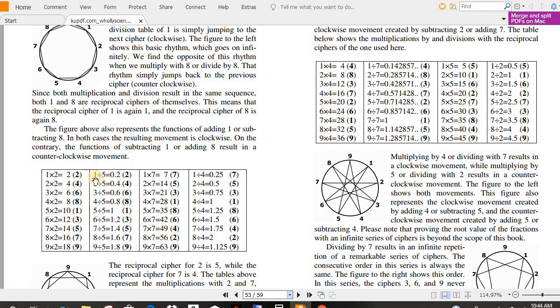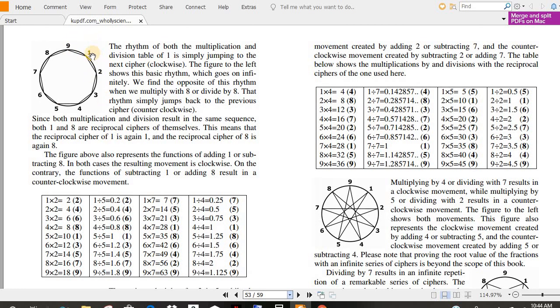This means that the reciprocal cipher of one is again one and the reciprocal cipher of eight is again eight. The figure above also represents the functions of adding one or subtracting eight. In both cases, the resulting movement is clockwise. On the contrary, the functions of subtracting one or adding eight result in a counterclockwise movement. What it's basically saying is it's going to go two or one, two, four, six, eight, ten, twelve, fourteen, sixteen, eighteen. And it's the same as here, two times two is four, two times three is six, so on and so forth, and same with division.